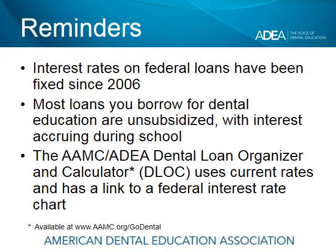Interest rates on federal loans have been fixed since the 2006-07 academic year. Prior to July 1, 2006, interest rates were variable on federal student loans — they actually changed every year on the same loan. But for the past nine years interest rates have been fixed on federal loans, and once they're set they do not change.